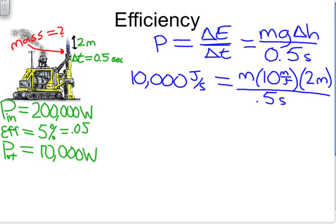We can cancel off the seconds on both sides. We have seconds in the denominator both places, so those cancel. And we can multiply things out. We know that 2 times 10 divided by 0.5 is 40. So we have the mass multiplied by 40. And let's get all the units here. It's meters squared divided by seconds squared. And we still have the 10,000 on this side.